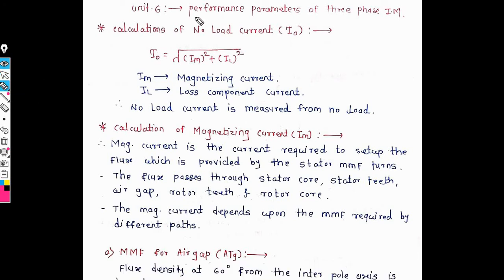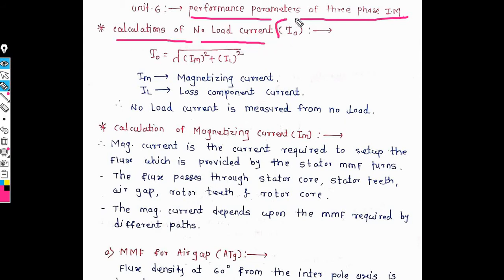In performance parameters of the three-phase induction motor, the first calculation is no-load current, that is I₀. This is very important, in which we first have to calculate magnetizing current Im and the core loss component, that is Ia.